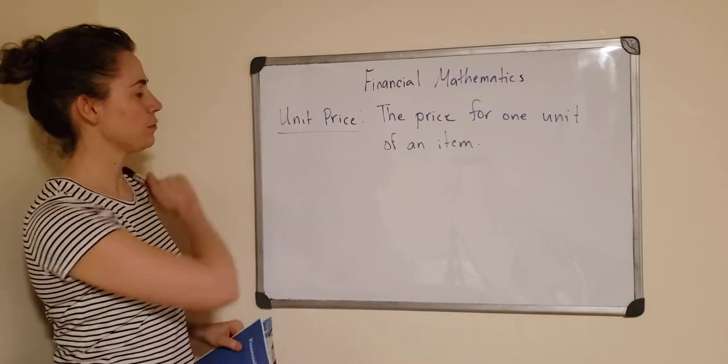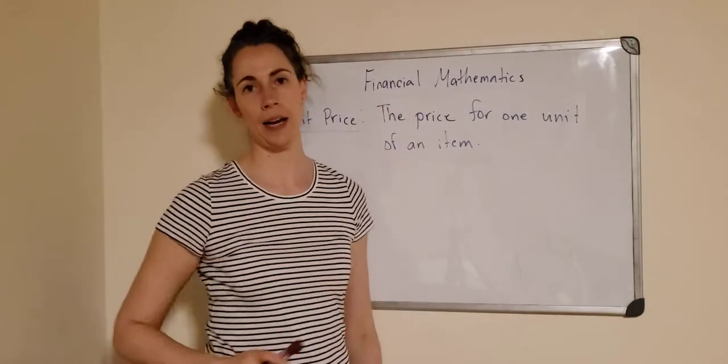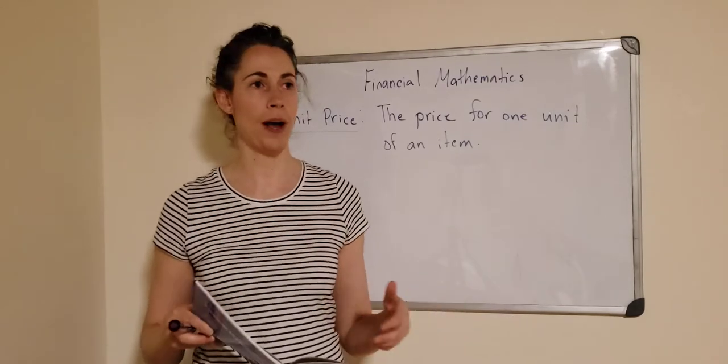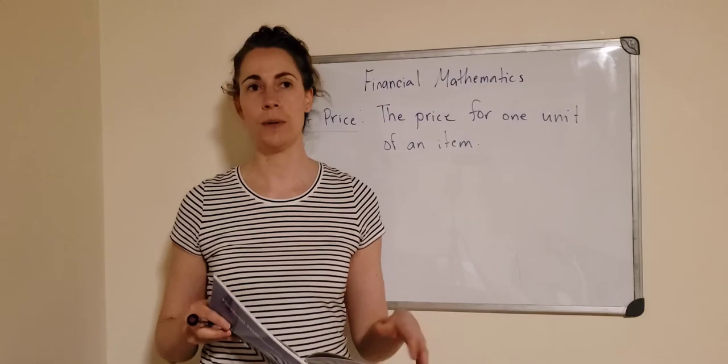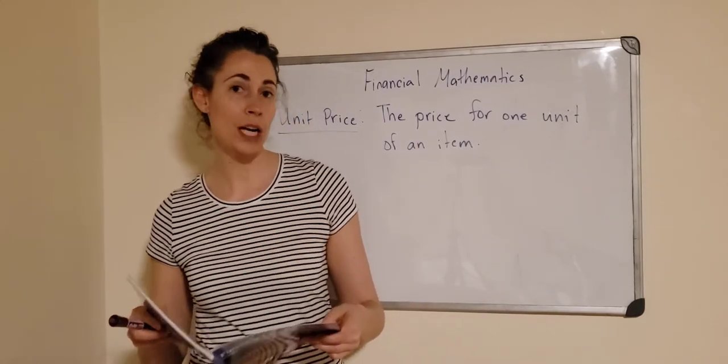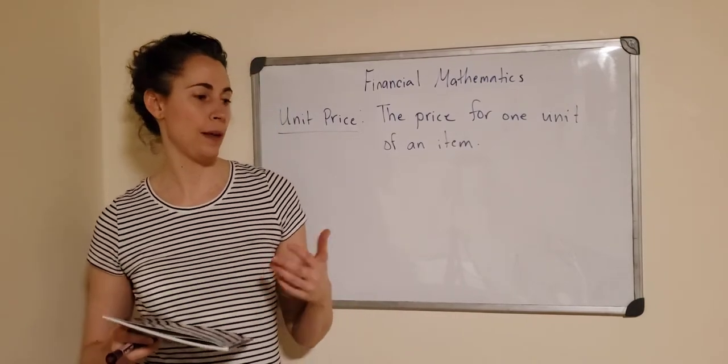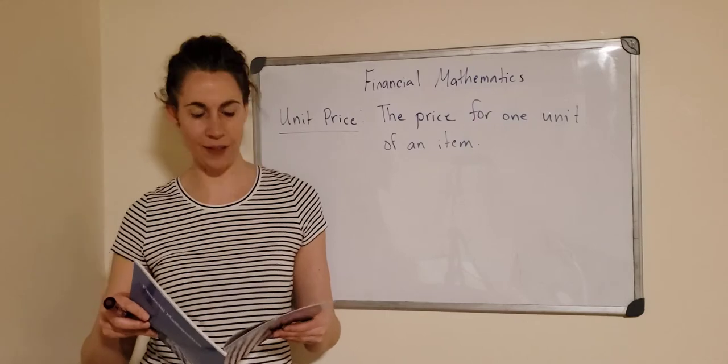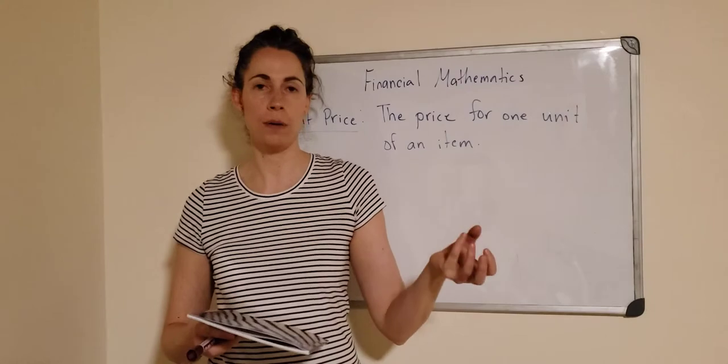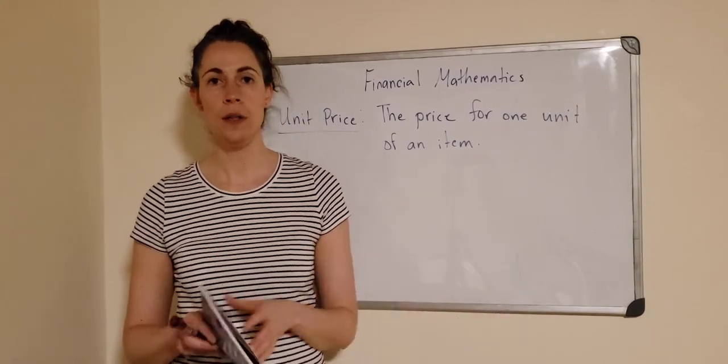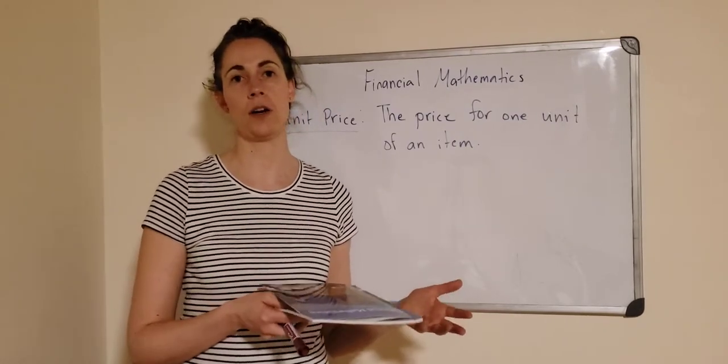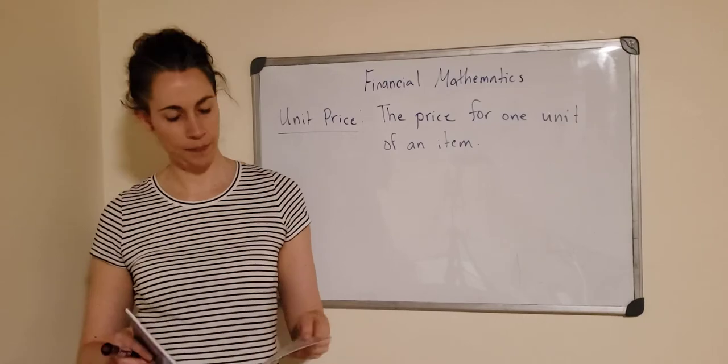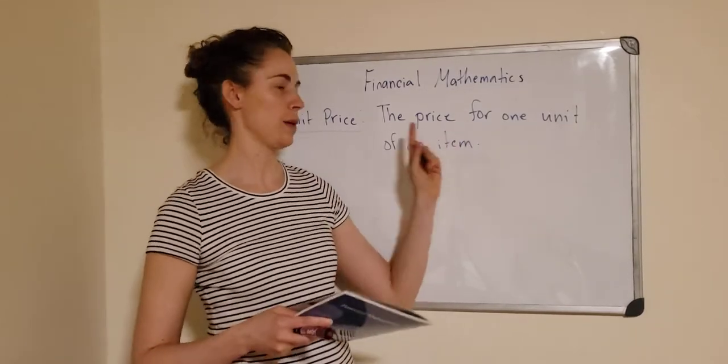I've written down the definition for unit price. Unit price is the price for one unit of an item. Some examples are price per liter - you might buy your milk or oil per liter. Another example is per meter - you could be buying flooring per meter. Another one is per item, like 50 cents per apple at the grocery store. Sometimes it could be weight - you'll often see kilograms as the price. Like bananas, you pay by the weight or mass. So the price for one unit of an item is called the unit price.